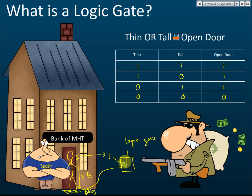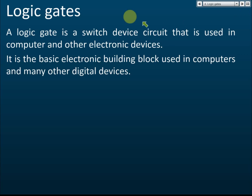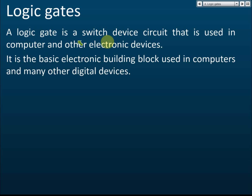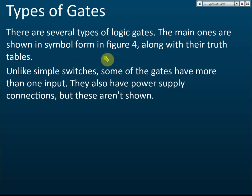For your exam, you don't need to know how the logic gate is designed using transistors or diodes. What you need to know is: the name of the gate, the symbol of the gate, the Boolean expression of the gate, and the truth table of the gate. A logic gate is a circuit device used in computers and other digital devices to make judgments and decisions.